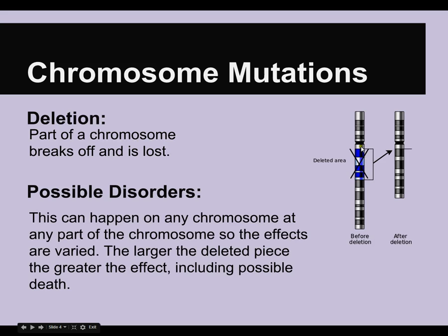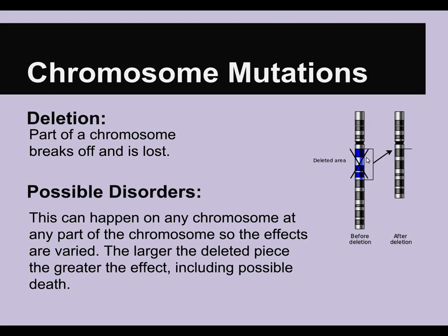Because different parts and different amounts of a chromosome can be deleted, there isn't really one specific disorder we point to for this. The larger the piece of chromosome that's deleted, the greater effect it can have on the offspring, including possible death. Sometimes it's emotional to have a miscarriage or a baby die before full term, but sometimes that may be because of a mutation where they're missing part of a chromosome and just can't survive. Some of these deletion mutations can be lethal.